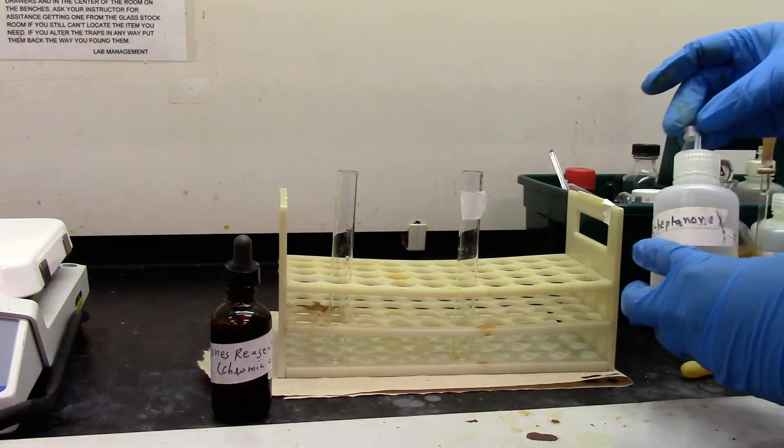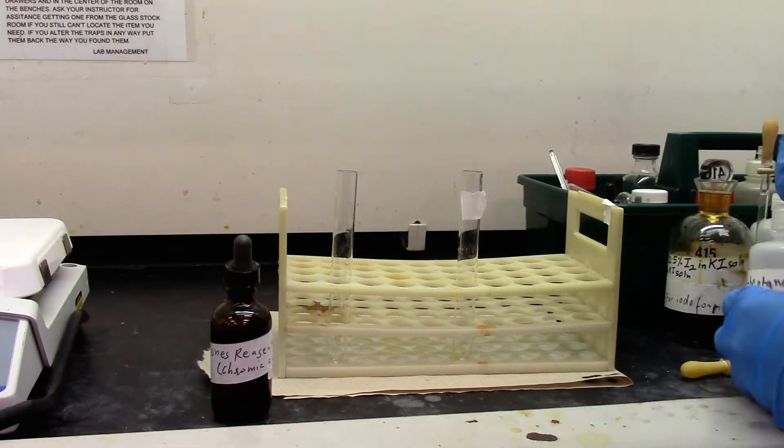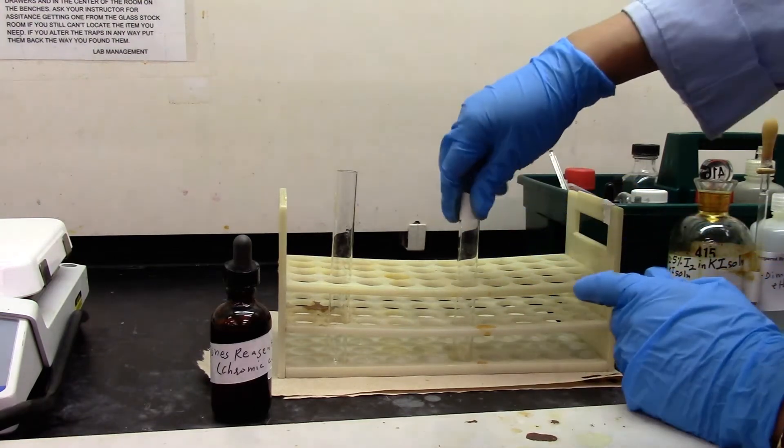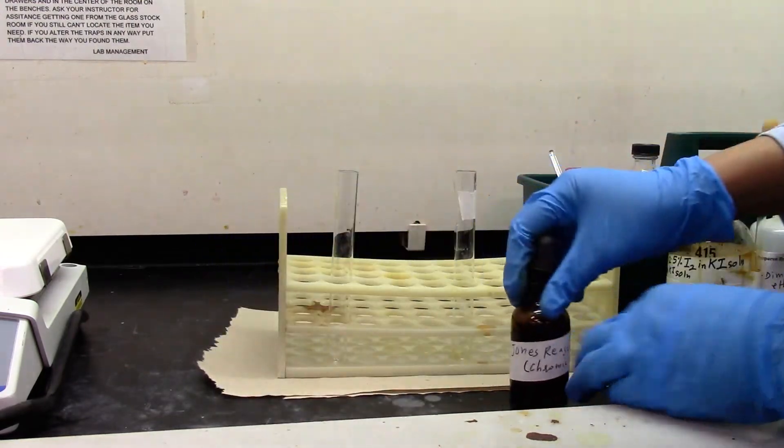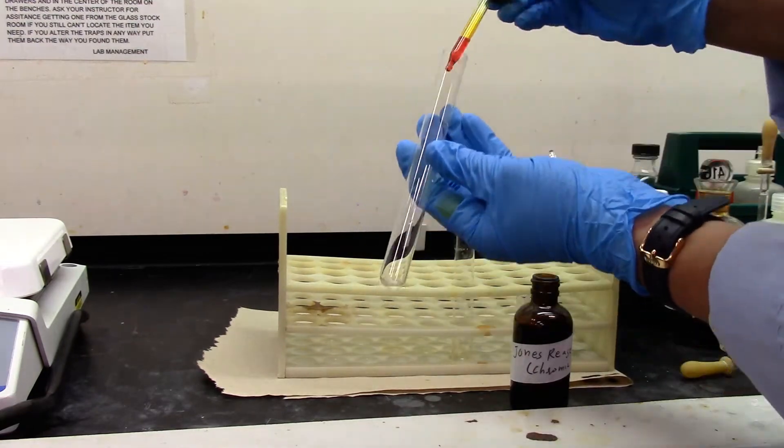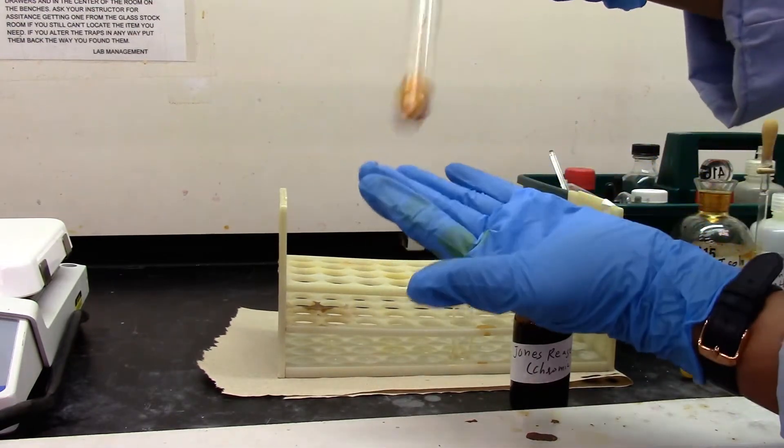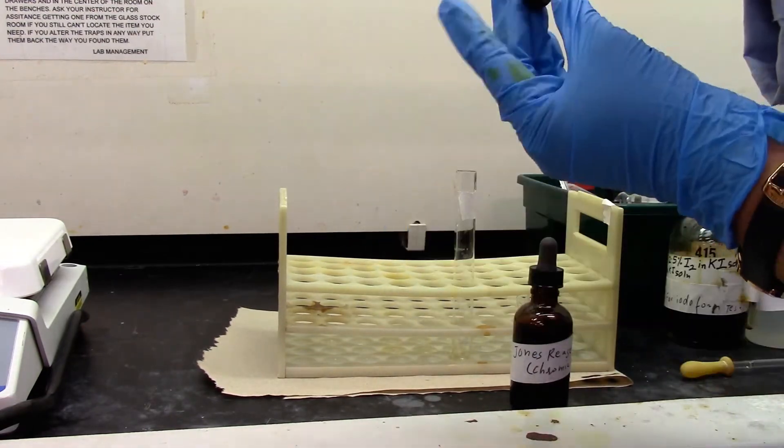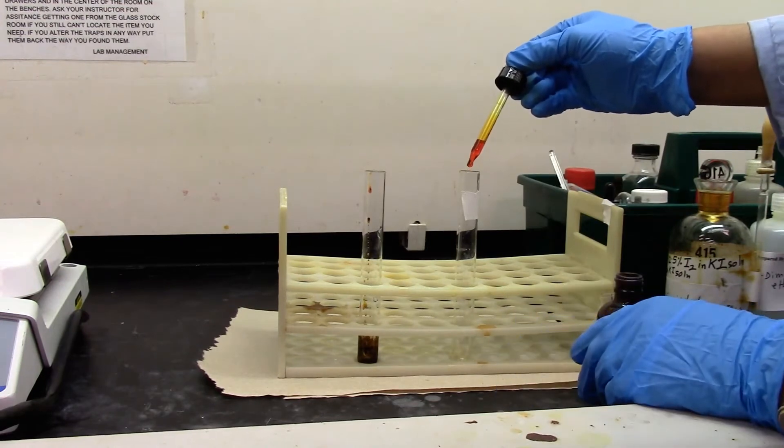Heptanone, which is the ketone, is my negative test. Jones test only responds to aldehyde, so this should be my negative test. Now I am going to add a few drops of Jones reagent and give it a mix.